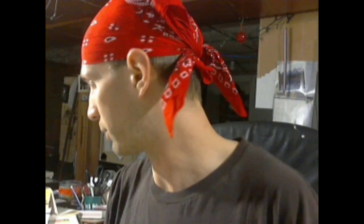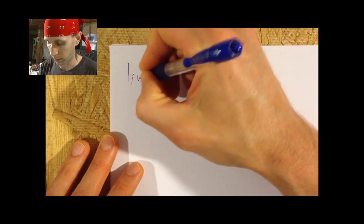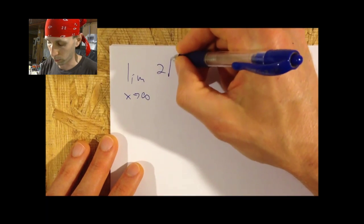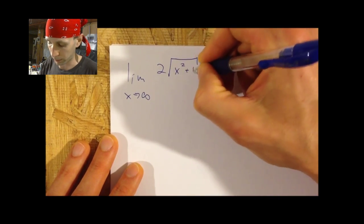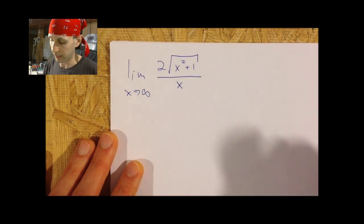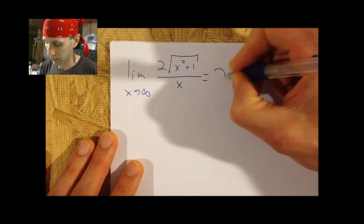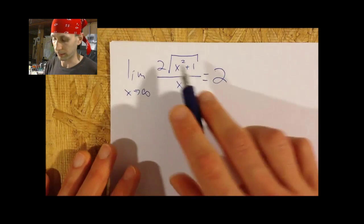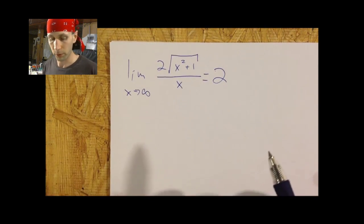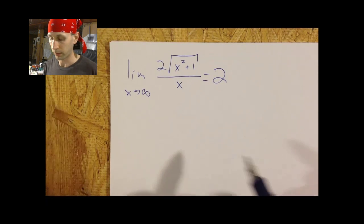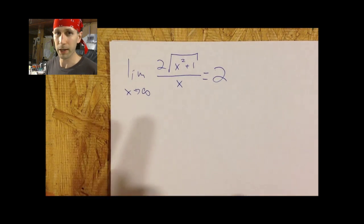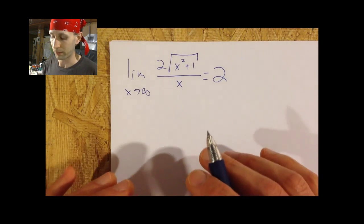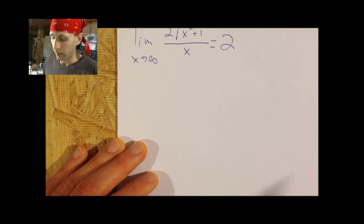The other proof I wanted to show was the limit as x approaches infinity of two times the square root of x squared plus one, over x. I wanted to show that this limit exists and is in fact equal to two. This is a little bit harder because it's got a square root in it, but you can work out ways to get around this. If you just sit there and stare at it long enough, you can definitely find a way.